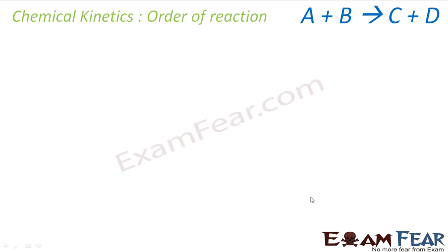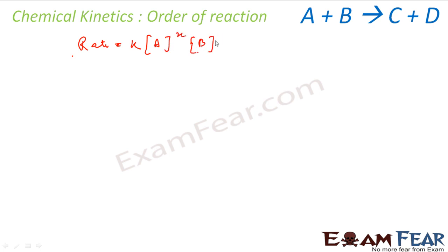Let's talk about a new term called order of the reaction. Order of reaction is the sum of powers to which the concentration of substances are raised in the rate equation. For a typical reaction A + B → C + D, the rate equation is: rate = K[A]^x [B]^y, and order is x + y, where x and y are experimentally determined values.